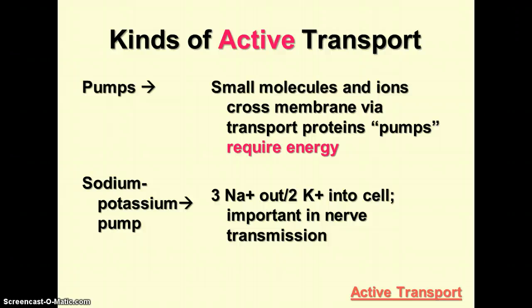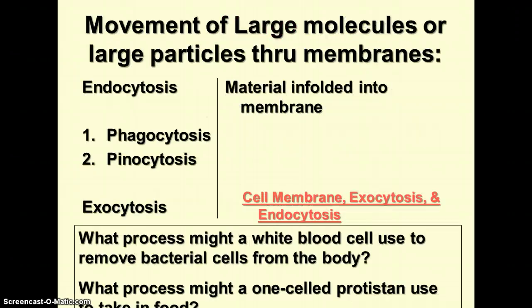The transmission of nerve impulses requires a difference in charge between the outside and the inside of the membrane. This is accomplished by moving sodium ions and potassium ions against their gradient to change the concentration of ions inside and outside the cell, providing the potential difference necessary for nerve transmission. There are also other ways that large molecules and large particles can cross membranes besides pumps — the two main processes are endocytosis and exocytosis.